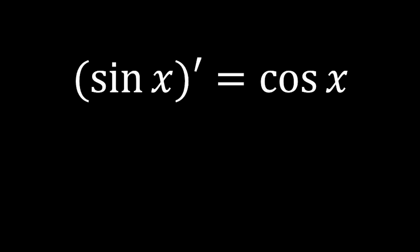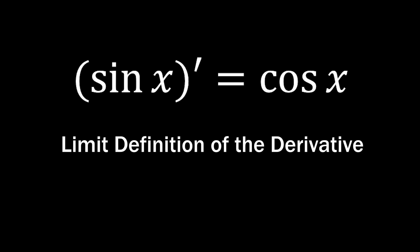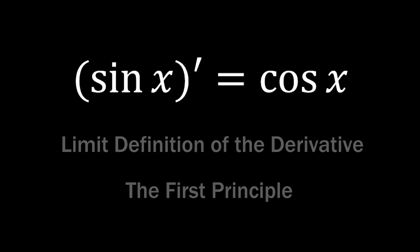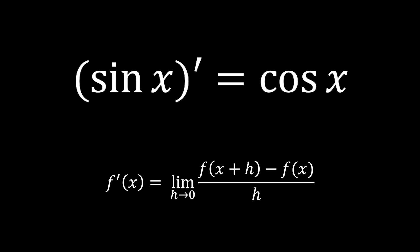In this video, I will explain in detail how the derivative of sine x becomes cosine x using the limit definition of the derivative, also known as the first principle. We'll use this formula to demonstrate how the derivative of sine x equals cosine x.